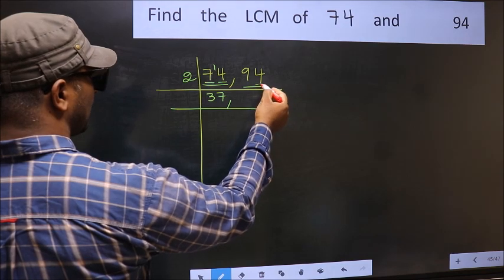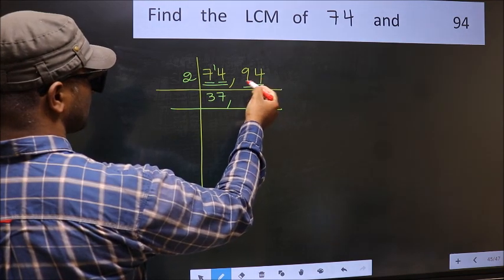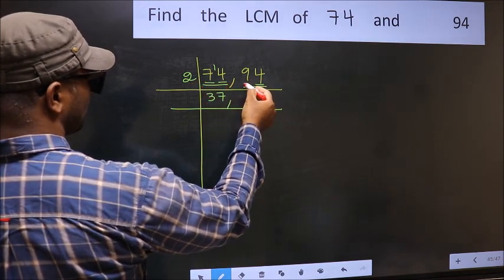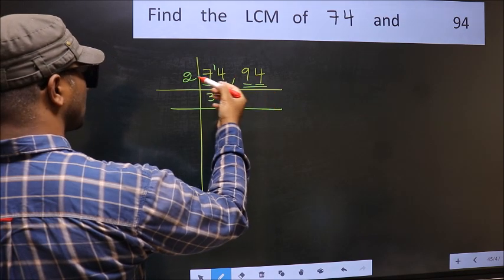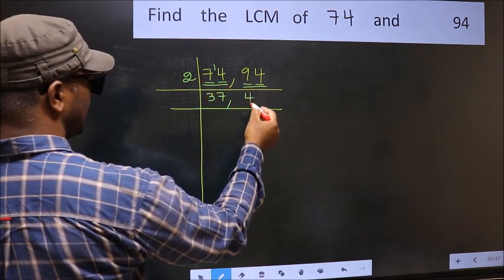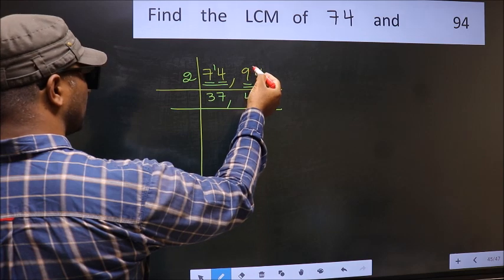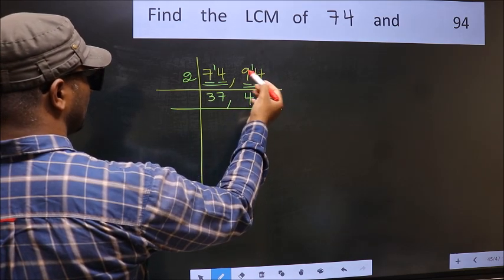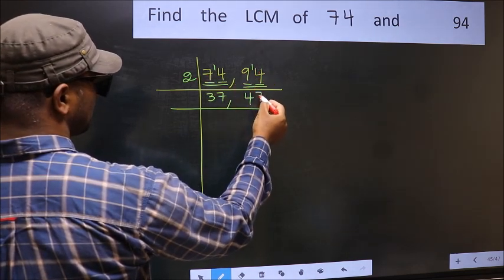The other number is 94. Last digit is 4, even, so this is divisible by 2. The first digit is 9. A number close to 9 in the 2 table is 2×4=8. 9-8=1. Carry forward 1 to get 14. When do we get 14 in the 2 table? 2×7=14.